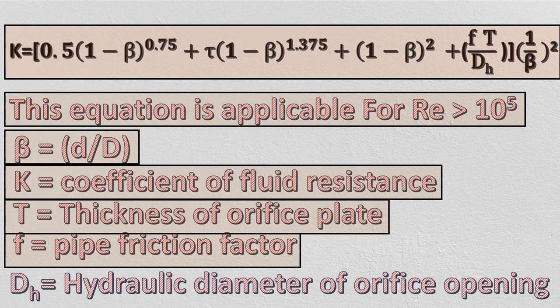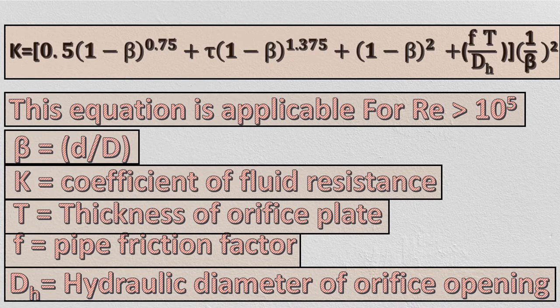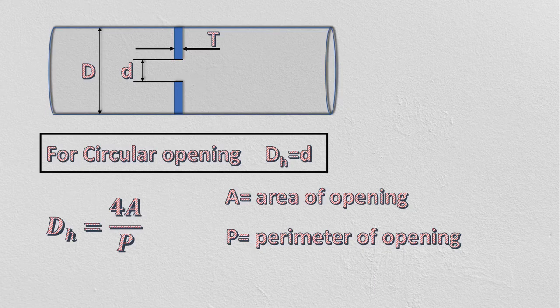You can also get a link in the description. D_h is the hydraulic diameter of the orifice opening. If orifice opening is circular, then hydraulic diameter is the same as the orifice opening diameter.